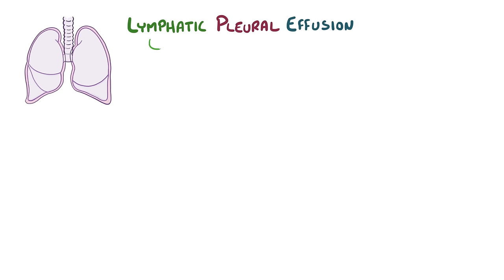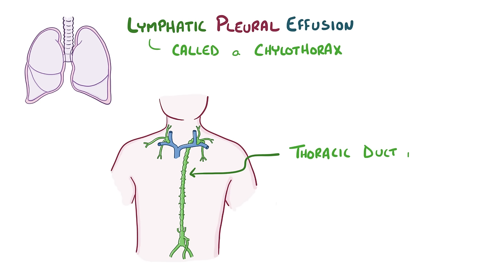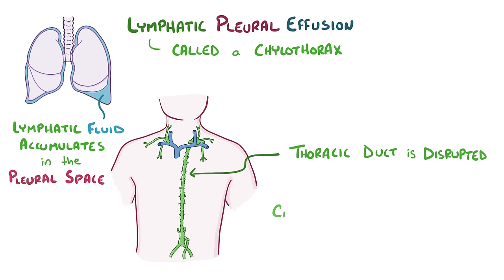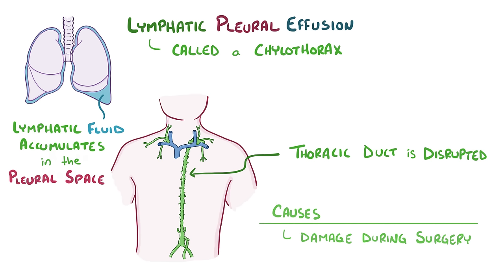Finally, there can be a lymphatic pleural effusion called a chylothorax. In a chylothorax, the thoracic duct is disrupted and lymphatic fluid accumulates in the pleural space. The most common cause of chylothorax is when the thoracic duct accidentally gets damaged during thoracic surgery, but it can also be caused by tumors in the mediastinum that press up against the thoracic duct and compress it shut.